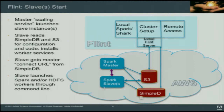The master needs to decide how to scale the cluster, so one of the things that runs on the master is a scaling service. The scaling service periodically asks: should I create more instances or should I kill more instances? And if creating them, how much am I willing to pay and how long do I want the bid to last? When a slave starts, it reads SimpleDB and S3, gets its connect URL from SimpleDB, and then launches Spark and/or HDFS workers.